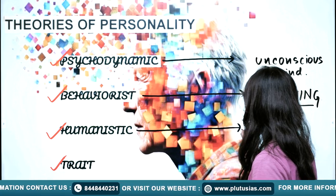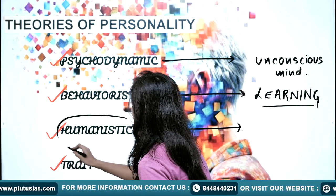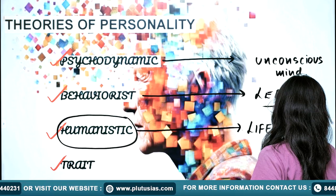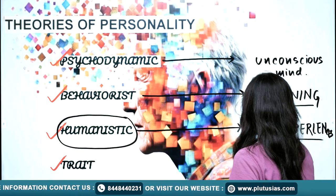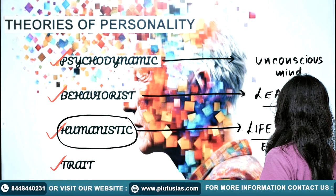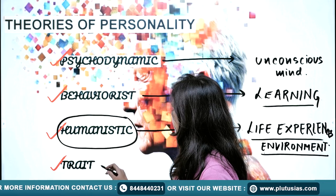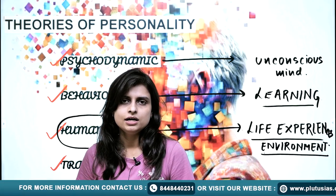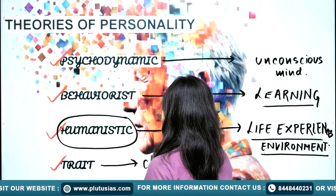The humanistic perspective majorly focuses on life experiences and the environment in which the person has been raised. Then there is the trait theory, which focuses on the characteristics of the personality. Trait theorists are not focusing on the unconscious mind, learning capacity, or environment — they directly focus on the traits or characteristics of a person's personality.